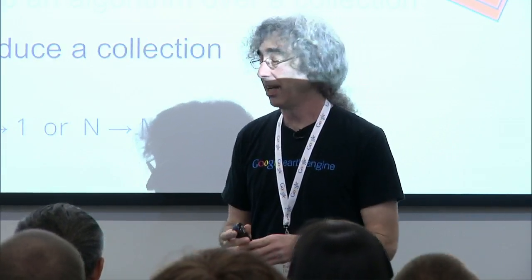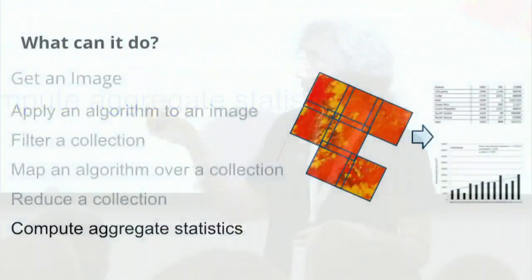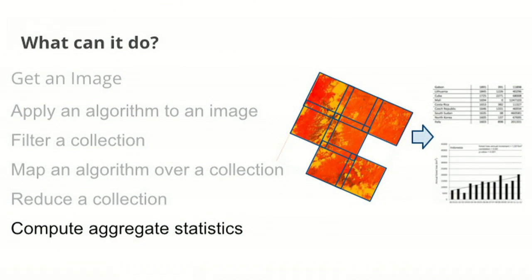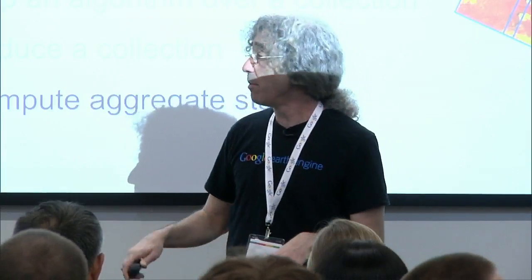This is basically the methodology we use to create the pretty Earth base map for Google Maps and Google Earth. And finally, you can compute aggregate statistics — you can look at an area, ask what the mean value is, the median value, a histogram of values. You can also graph the results and download them. You can download the imagery and the values as a CSV file.